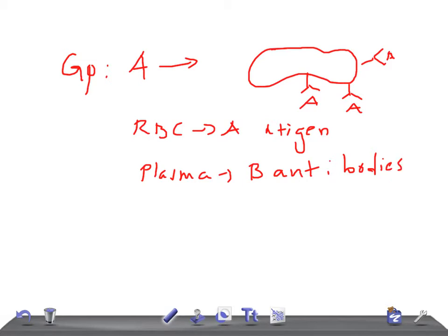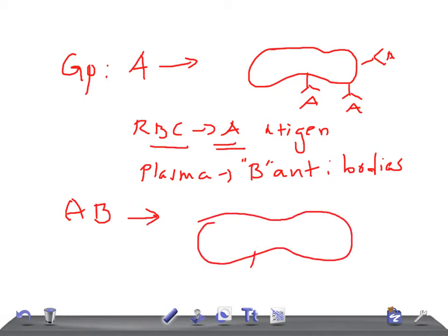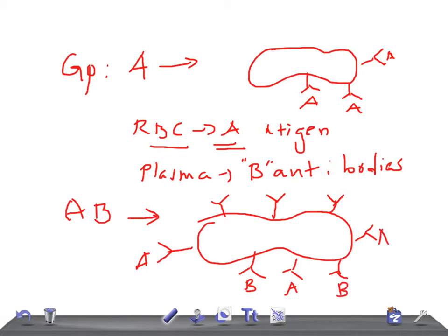If it's group B, then on the surface of the RBC you will get a B antigen, and the plasma contains A antibodies — that's the reverse. Now, group AB means they have both A and B surface antigens on the RBC, and in the plasma they don't have antibodies — neither A nor B antibodies in the plasma.